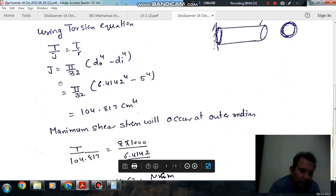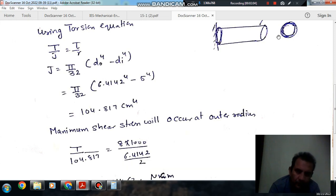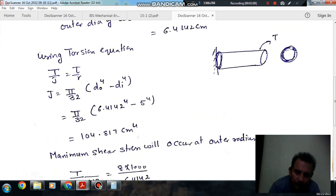Now using the torsion equation, we can find the torque. The equation is tau equals T by J times R, where tau is shear stress, T is torque, J is polar moment of inertia, and R is the radius. Maximum shear stress will occur at the outer fiber of the weld.